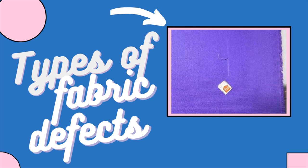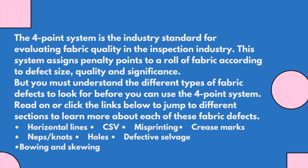In this video we're going to be talking about types of fabric defects. The four-point system is the industry standard for evaluating fabric quality in the inspection industry. This system assigns penalty points to rolls of fabric according to defect size, quality, and significance. But you must understand the different types of fabric defects to look for before you can use the four-point system.